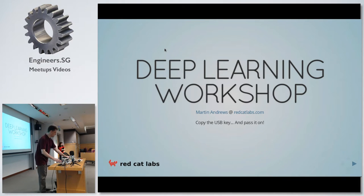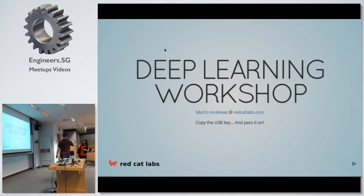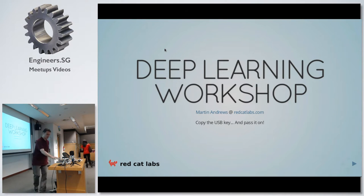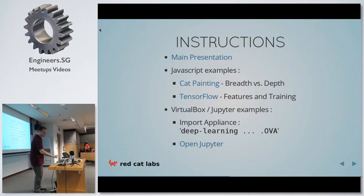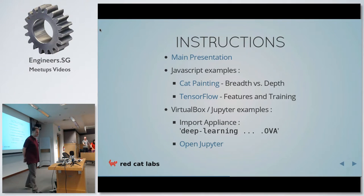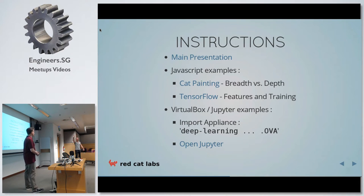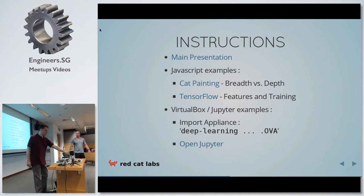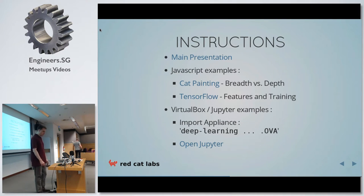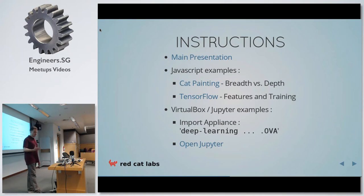What is it for? It's for the deep learning workshop, which you're at, on a rainy Saturday morning. In this, if you just do a right arrow, you'll have some of these things. There's the main presentation — you don't actually need to follow along in that at all. There are links to something called cat painting, another to TensorFlow which is a playground application. These first two examples are JavaScript, which you're going to run without needing the virtual machine at all. And then there's the VirtualBox thing, which is for the real meat of it.